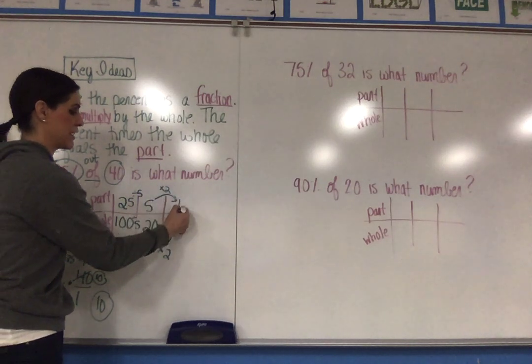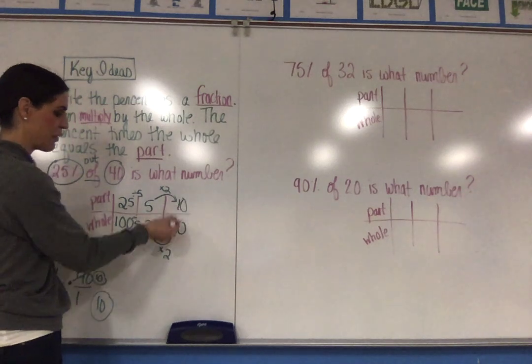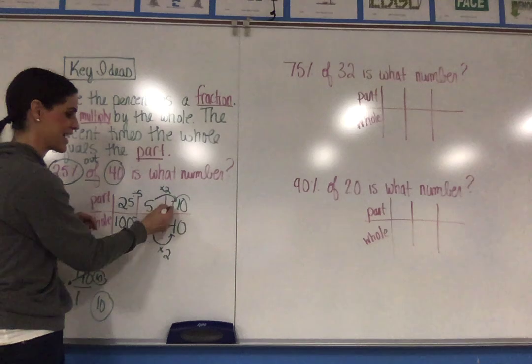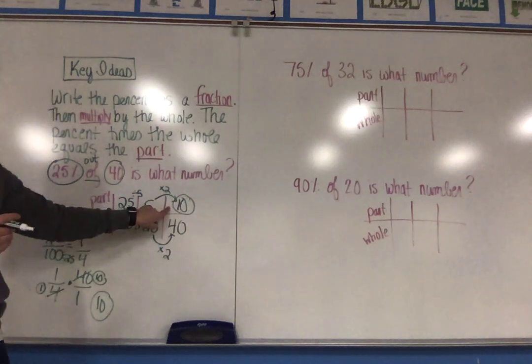5 times 2 gives me 10. So now here you see that the whole is out of 40. So once again, this shows me that the part is 10.